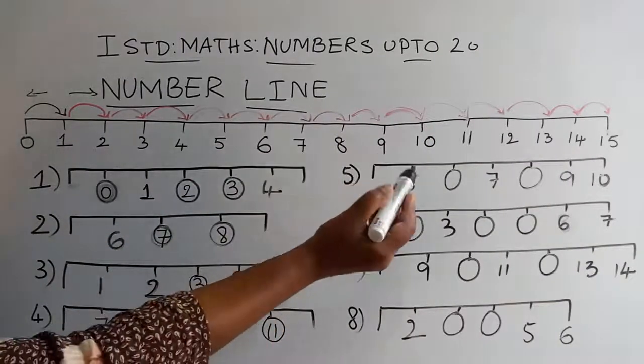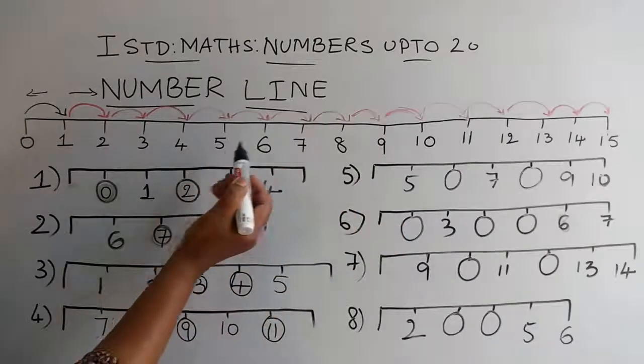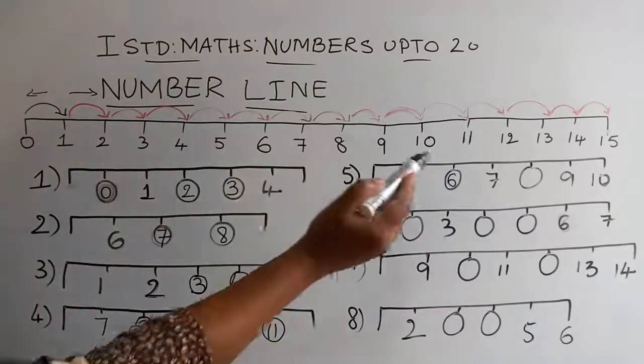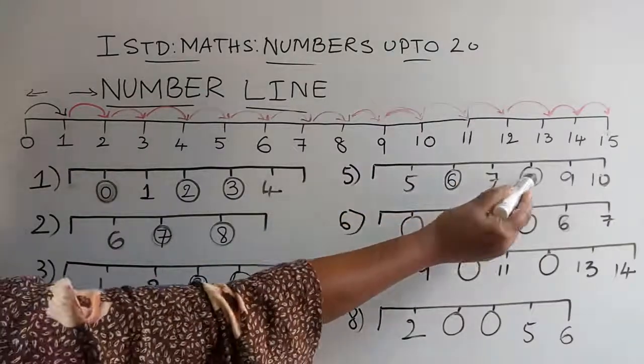Coming to the fifth one. I have 5 here, 5, 6. Then I have 7. After 7, I have 8.